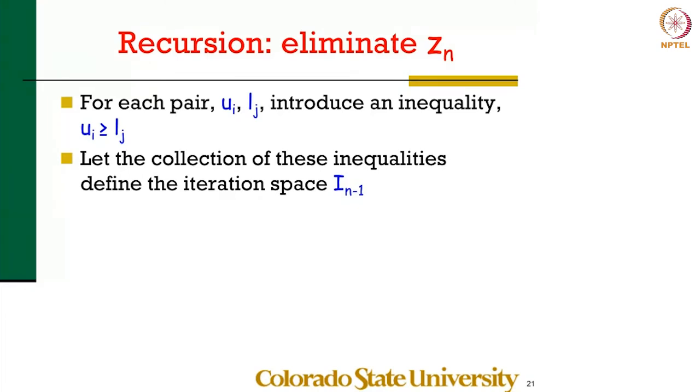Once you have done that, eliminate z_{n-1}, and you will have a polyhedron that defines a set of indices, the bounds on the inequalities that i_1 to i_{n-2} must satisfy, and so on.